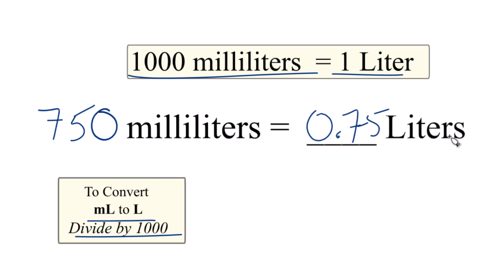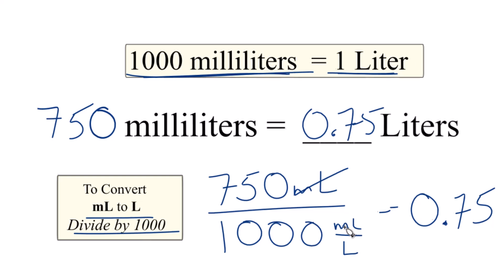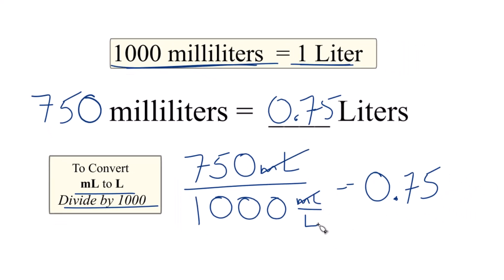Let's write it out with the units though. We have 750 milliliters, we divide that by a thousand, and that's a thousand milliliters in one liter, so we can call this milliliters over liters. Now 750 divided by a thousand, that's 0.75, which is what we found before. Milliliters top and bottom cancel out, we're left with liters.